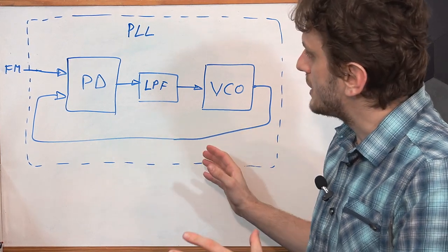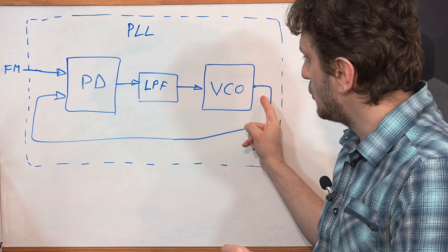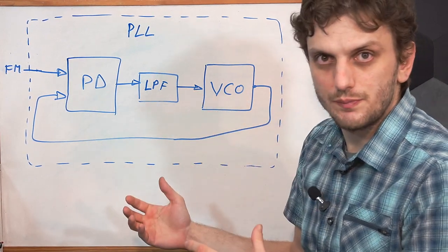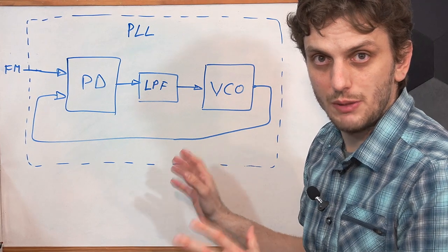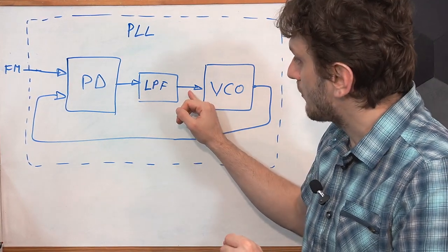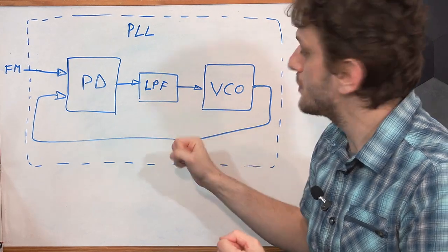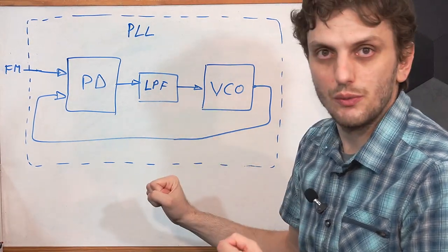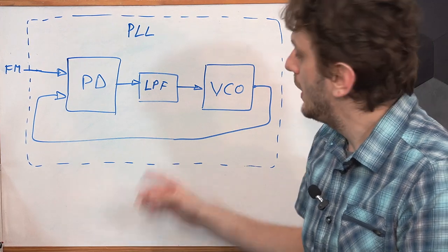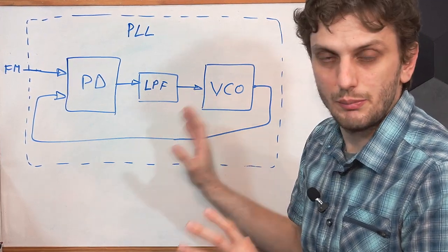So the output of this PLL circuit will not be the output of the VCO, but rather the signal driving the VCO. The only way to keep this loop stable is if we have our initial message — at a different scale of course — driving our VCO. So this will be the signal that we will be interested in with the PLL.